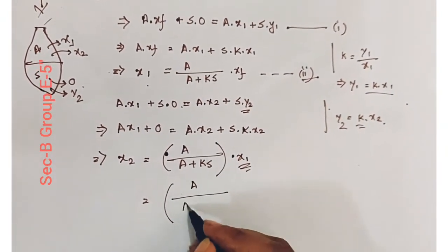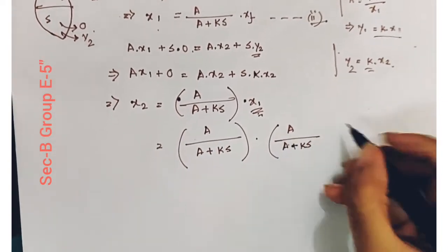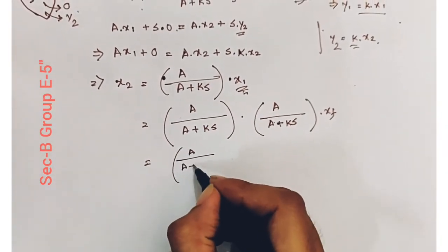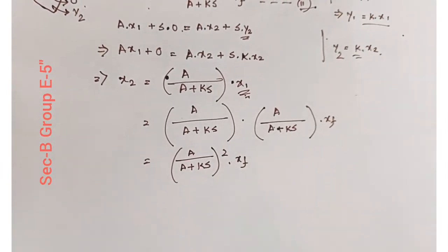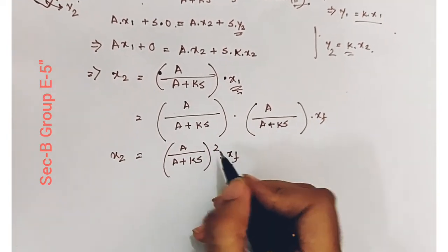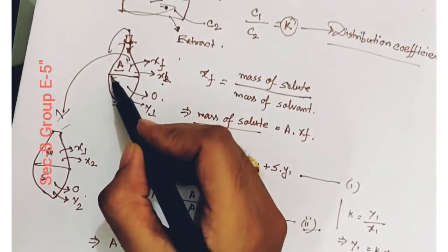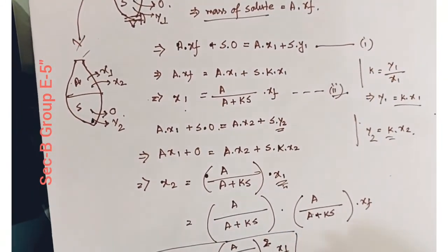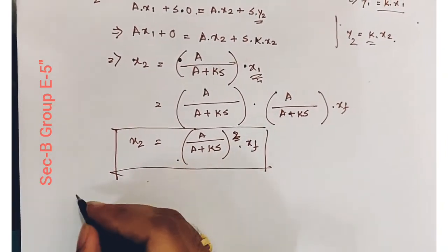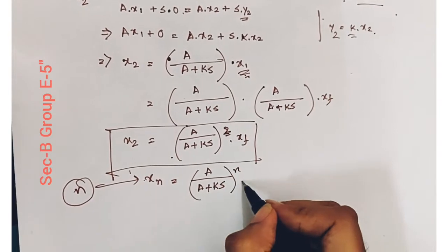Substituting X1 = A/(A + KS)·XF into the expression for X2, we get X2 = [A/(A + KS)]²·XF. This is the concentration of the feed in the raffinate when liquid-liquid extraction is performed twice. It is clear that when the liquid-liquid extraction process is performed N times, then XN = [A/(A + KS)]^N · XF.